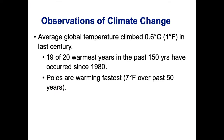The next thing we're going to get into is observations of climate change. What do we know about how the climate has been changing? The average global temperature went up about 0.6 degrees Celsius, or 1 degree Fahrenheit, in the last century.